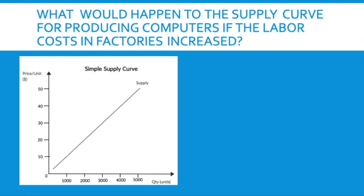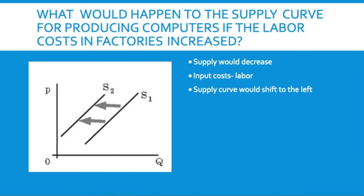What would happen to the supply curve for producing computers if labor costs in factories increased? We would have a decrease in supply of computers because paying workers more raises our input costs of labor, meaning less profit from those computers. At every price we make less money, we'd be less willing to produce them, and our whole line would shift to the left showing a decrease in supply.